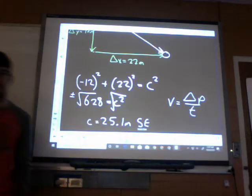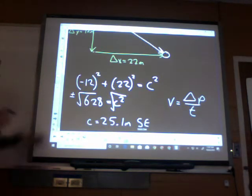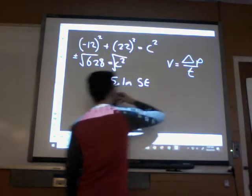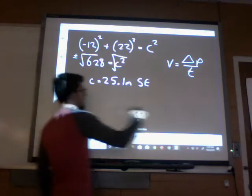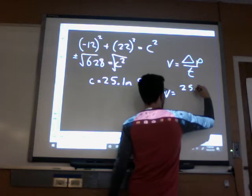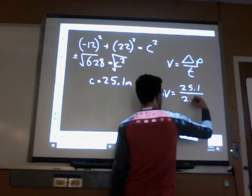V equals delta P over T. Notice that they're the same equation. They look the same. You just tack on X's and Y's to make it more specific. So to get velocity, we'll just take delta P over T. And we'll do it. 25.1 over 2.1.